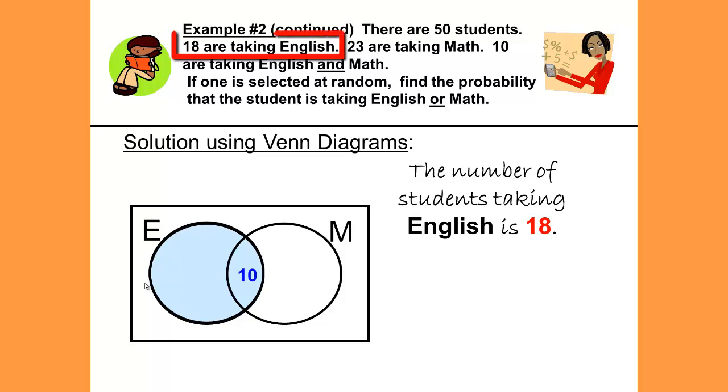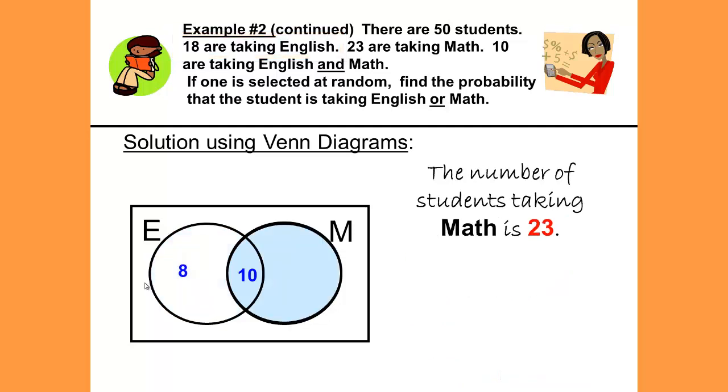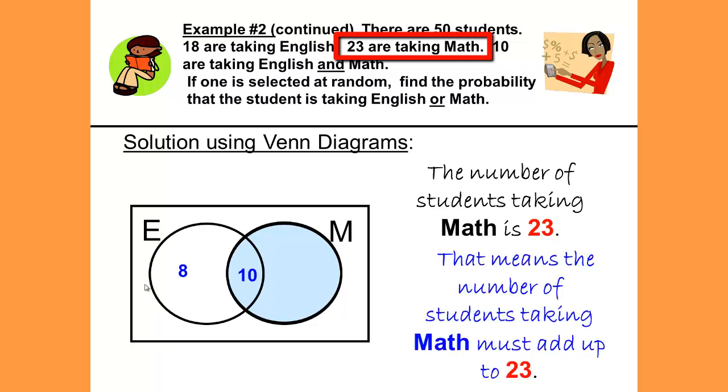The number of students taking English is 18. That means that the total number of students in the E circle will be 18. We already have 10 students. So do the subtraction. 18 minus 10 will leave us 8. The number of students taking math is 23. We already have 10 students in the math circle. 23 minus 10 gives us 13.